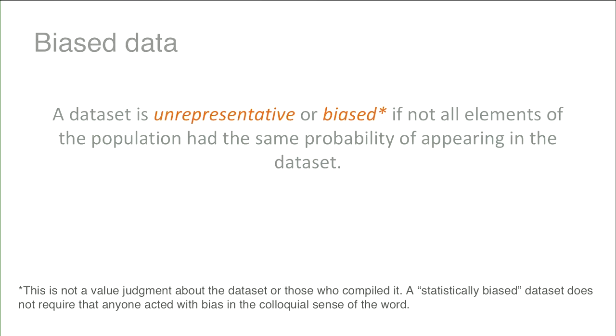I want to be clear about what I mean by 'biased data' — I'm talking about a statistical concept. It means a dataset where some things you're trying to measure are more likely to appear than others. For crime data, that simply means some crimes that occur are more likely to be recorded than others. This isn't necessarily a value judgment about the dataset or anyone who compiled it. You can compile very useful data that's non-representative, and the word 'bias' can raise hackles, but that's what I mean.